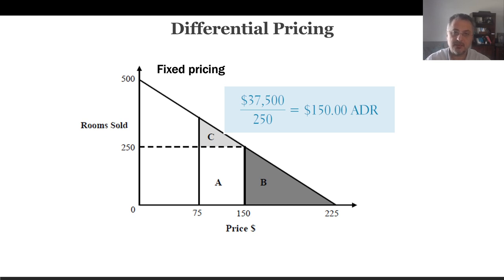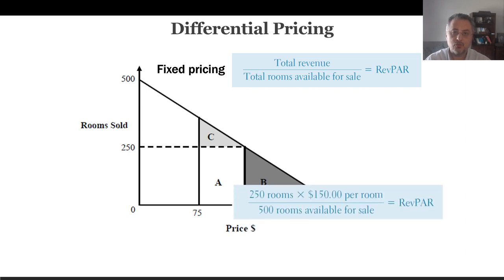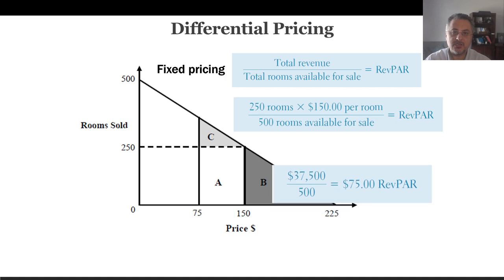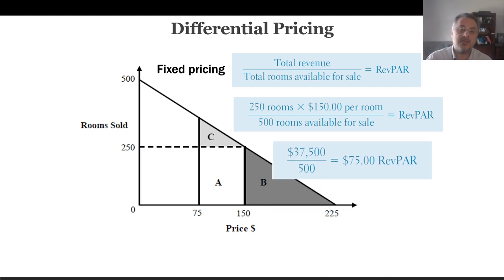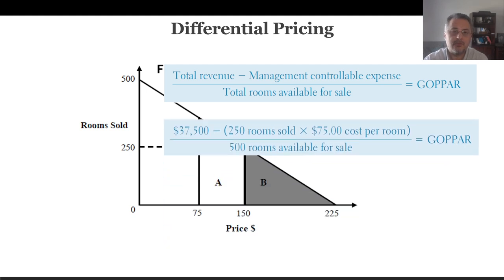Let's do some basic calculations. First, let's calculate ADR. ADR is the total room revenue divided by total rooms sold. How many rooms are we selling? 250 rooms. And how much is each room? $150 per room, which is going to be divided by 250 rooms sold. If you calculate that, $37,500 divided by 250, which gives us $150 ADR. And if you calculate the RevPAR, that is total revenue divided by total rooms available for sale.